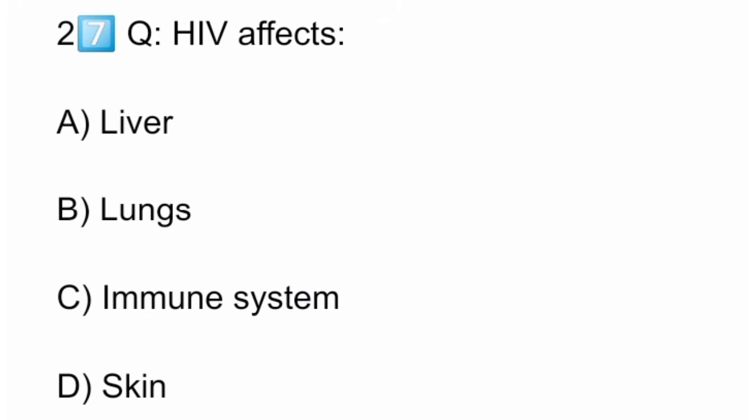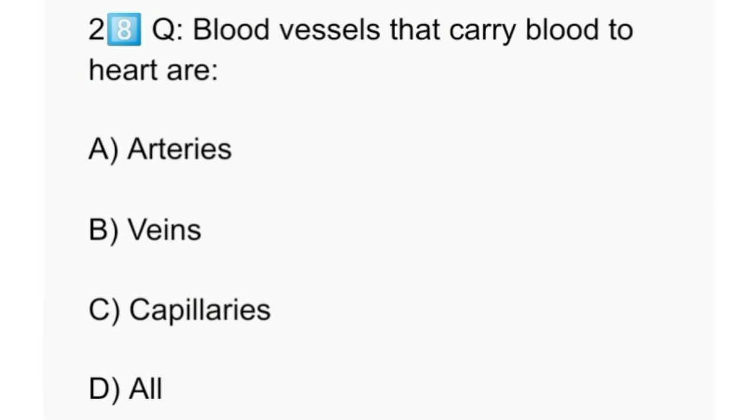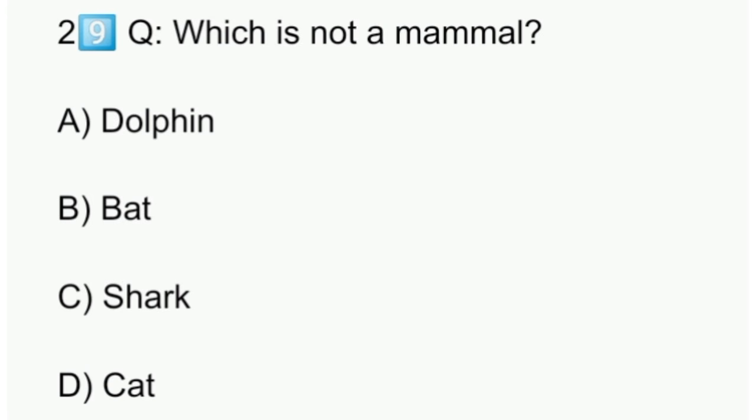Twenty-seven: HIV affects. Twenty-eight: Blood vessels that carry blood to heart are. Twenty-nine: Which is not a mammal?